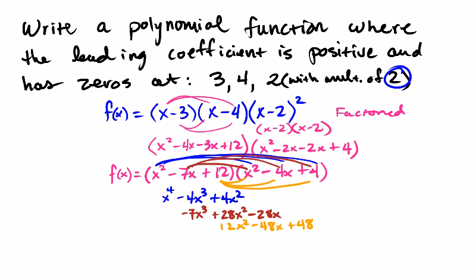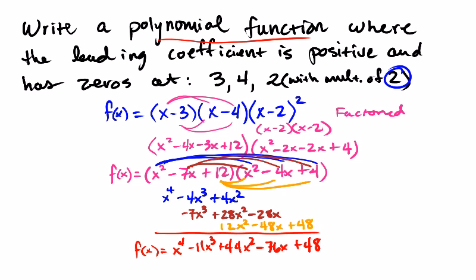And then I'm going to add down all the like terms together. And you'll have your final answer. So f(x) would equal x⁴-11x³, that would be 44+44x², oh my goodness, that would be 6 carry the 1, -76x+48. And that would be how you would write a polynomial function when you're dealing with some multiplicity. Alright, have a great day.